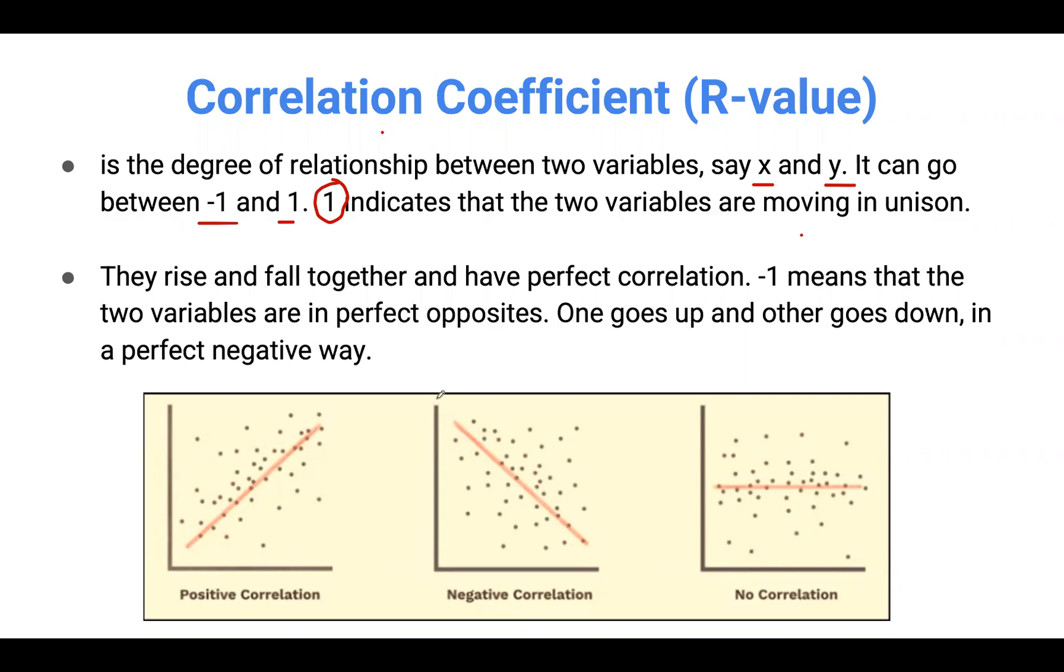Let's look at an example here. So here we have Y and X. An increase in Y results in an increase in X. They move perfectly together.